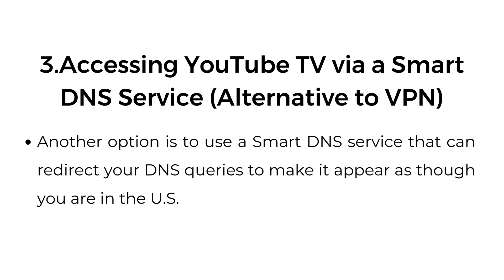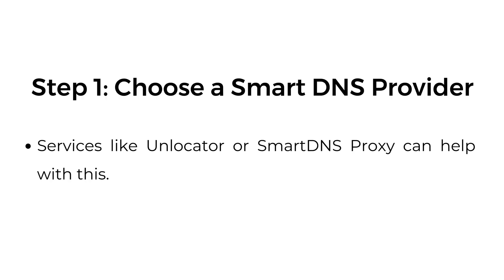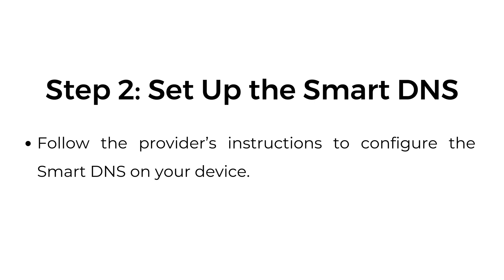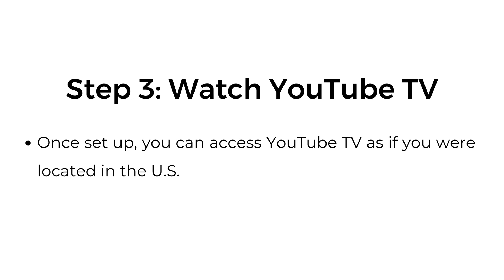Number three: accessing YouTube TV via a smart DNS service, an alternative to VPN. Another option is to use a smart DNS service that can redirect your DNS queries to make it appear as though you're in the US. Step one: choose a smart DNS provider. Services like Unlocator or SmartDNS Proxy can help with this. Step two: set up the smart DNS. Follow the provider's instructions to configure the smart DNS on your device. Step three: watch YouTube TV. Once set up, you can access YouTube TV as if you were located in the US.